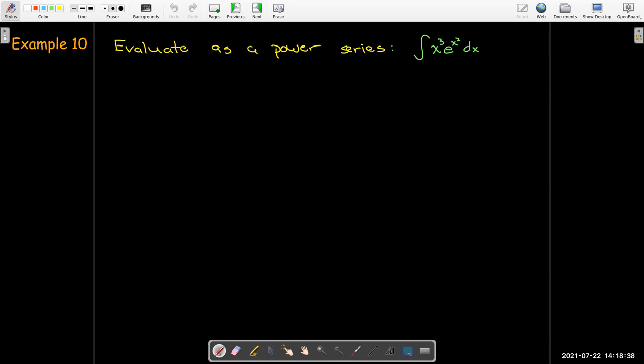In our last example, we're going to evaluate this integral as a power series. We have in the integrand x cubed times e to the x squared. We might be able to evaluate this using integration by parts. I'm not sure. But we're asked to do it as a series. And that is actually quite simple.